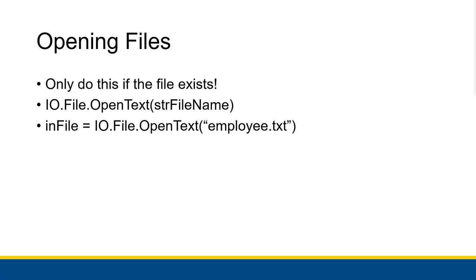Opening files for reading is a lot simpler than opening files for writing. All you have to do is use the OpenText method of IO.File. You type inFile = IO.File.OpenText passing in the filename you want to open. You only do this if you know for sure the file exists — so inside an if statement or a procedure called from within one. This method will create a StreamReader object that gets stored inside your inFile variable, which you can then use to start reading.